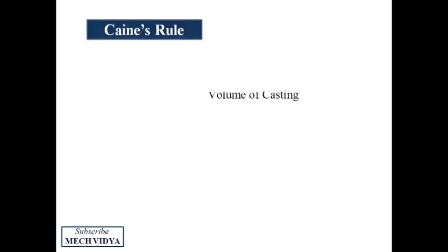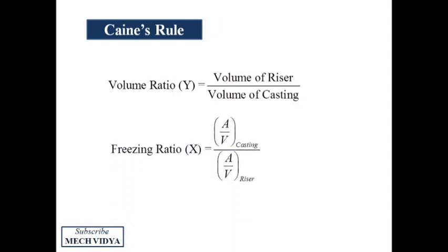Next in the Caine's rule, we have two ratios. The volume ratio, which is the ratio between the volume of the riser to the volume of the casting and the freezing ratio, which is nothing but the ratio between the surface area to volume of the casting to the surface area by volume of a riser.